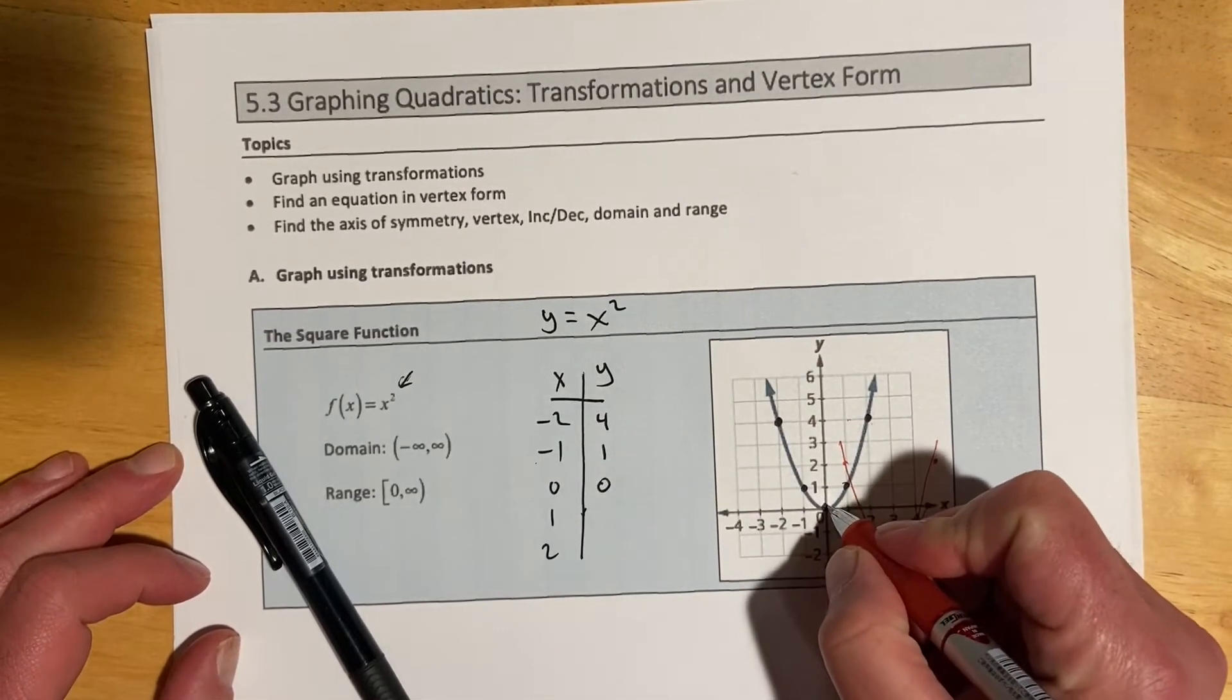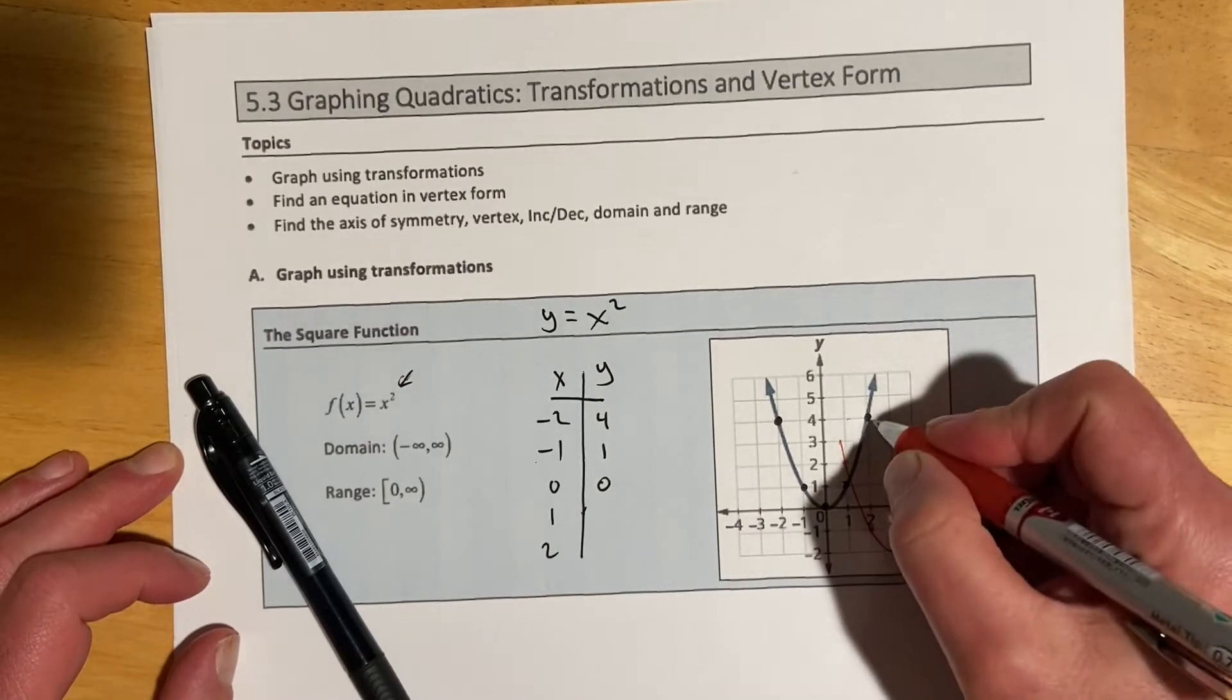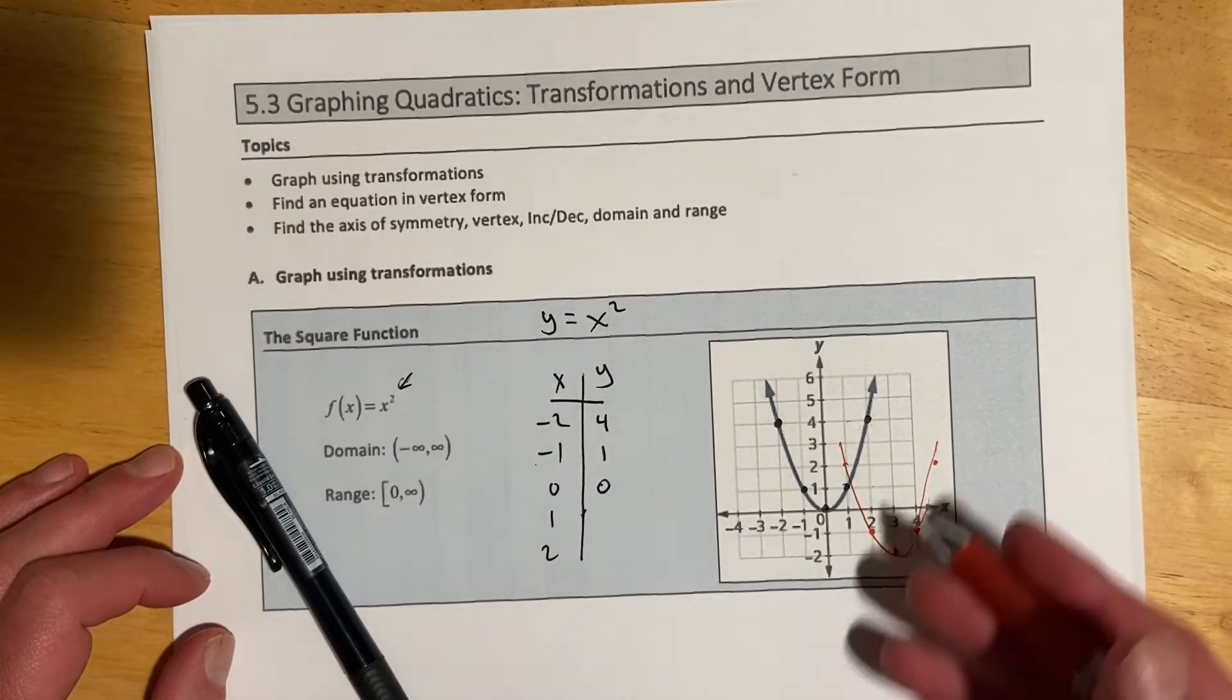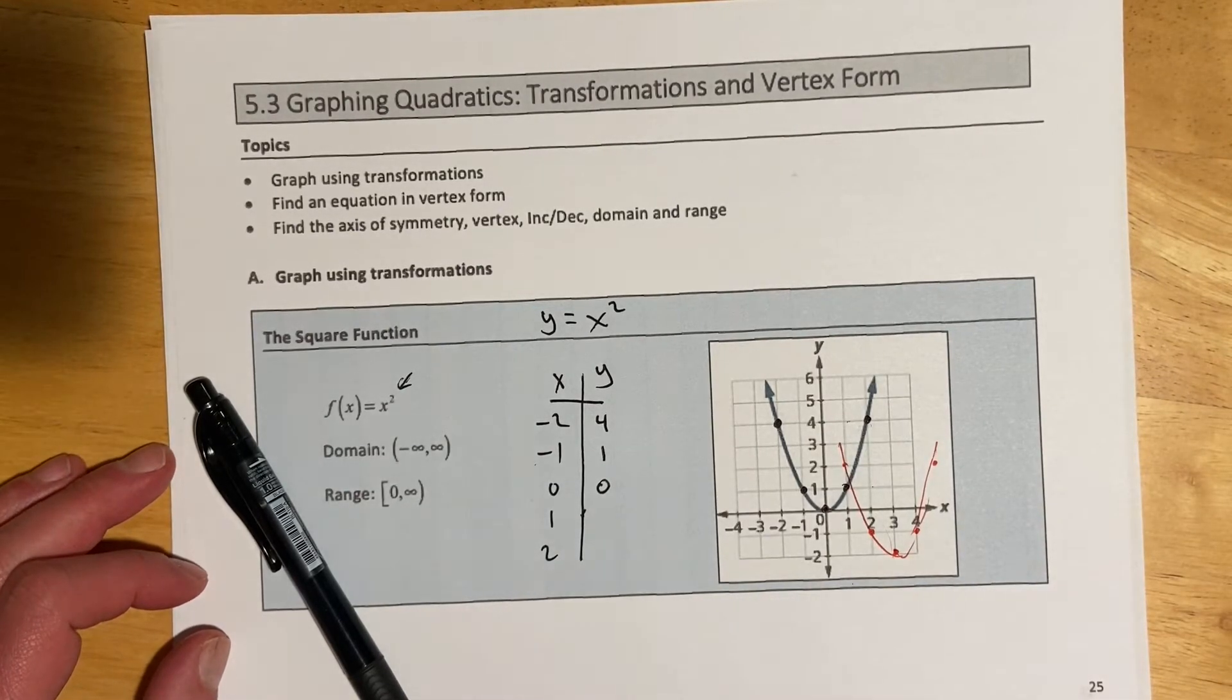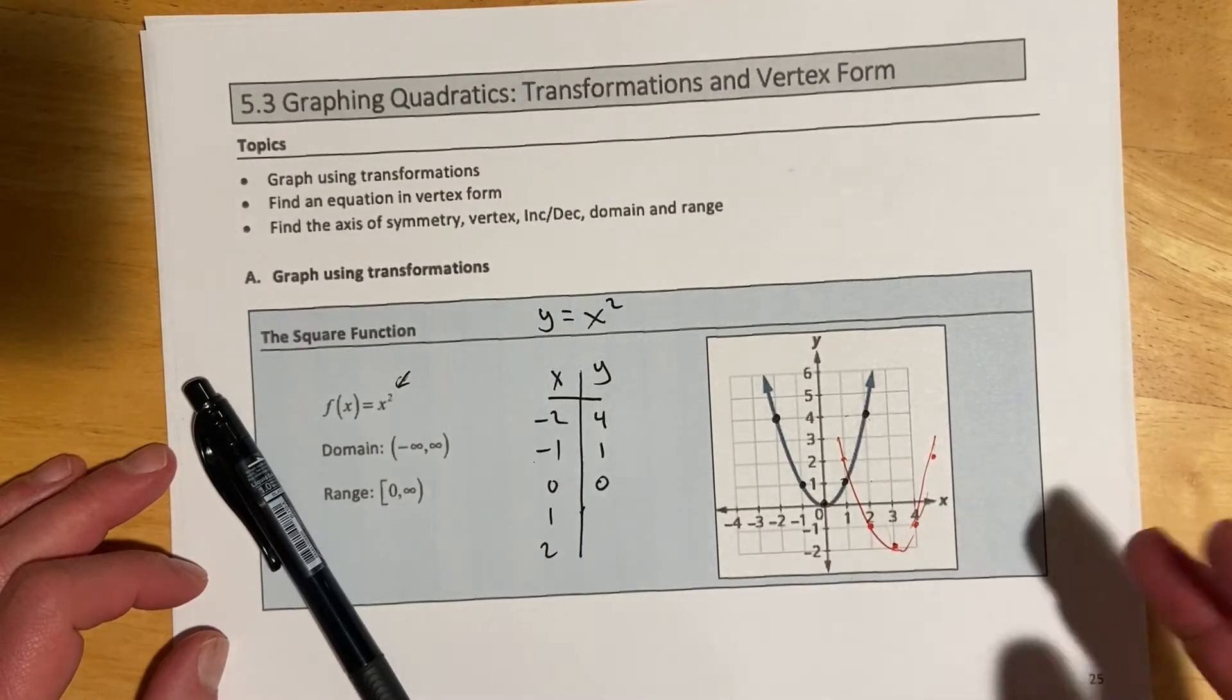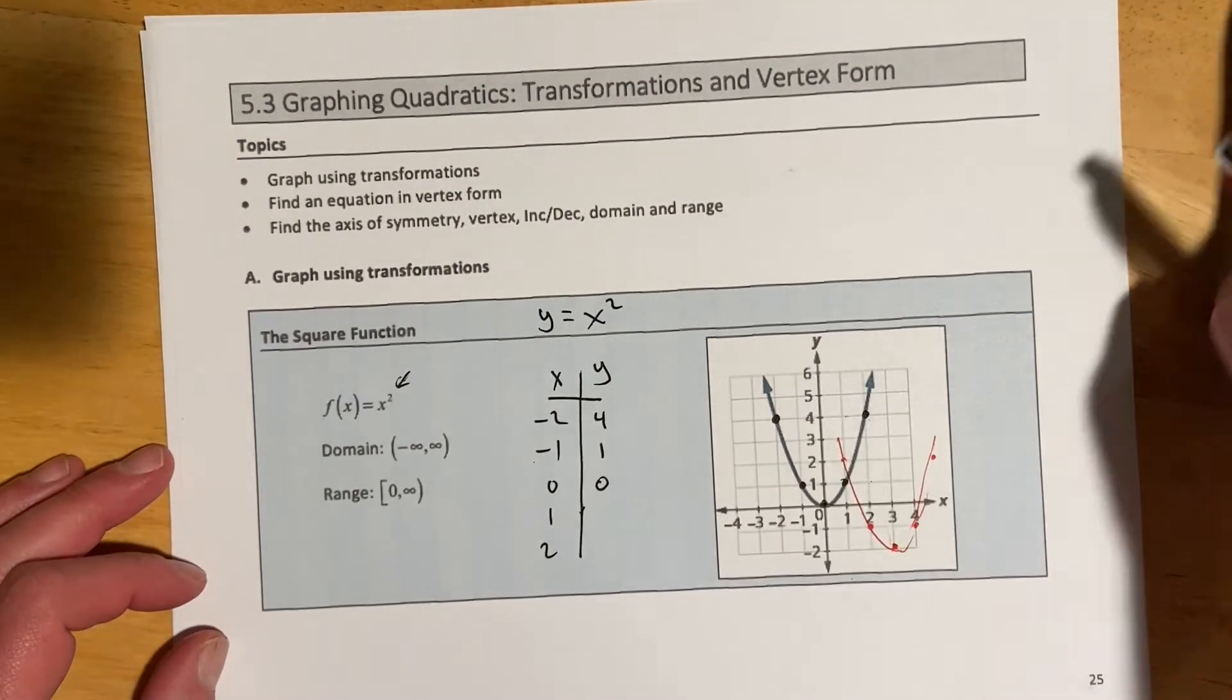When you guys do this on the computer, it's a bit easier, because you're going to click on the vertex, and then a second point, and it's going to draw it for you. But on paper, here's what it would look like. So if you're watching this video in a quarter we're actually back on campus and it's a paper test, this is sort of more what I'd be looking for.